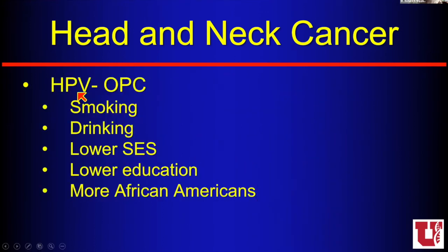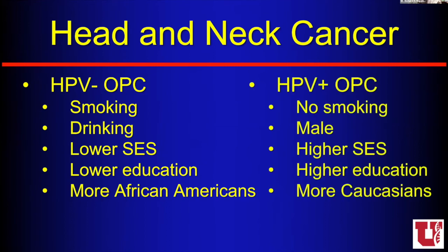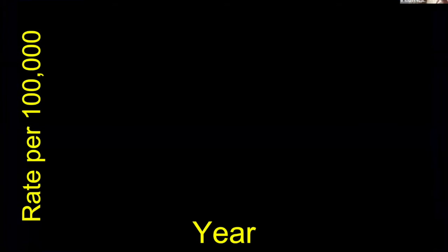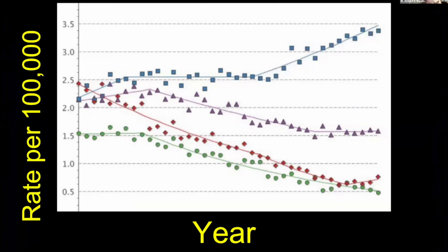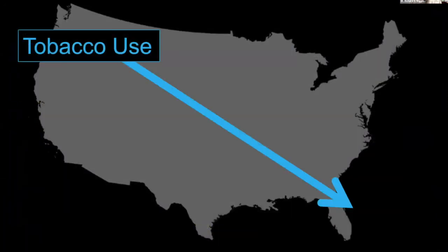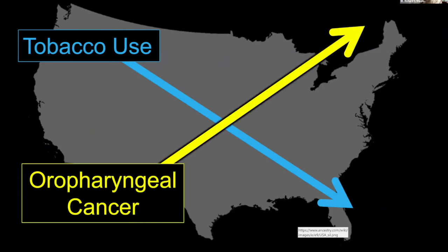HPV-negative or keratinizing squamous cell carcinomas are associated with smoking and drinking — typically lower socioeconomic status, lower education, more often African Americans. Over the past five to ten years, we now have a whole new discussion about HPV-positive oropharyngeal squames. Often these patients are non-smoking, almost always male, often from higher socioeconomic status with higher education, and more commonly found in whites. This has really changed how we think about head and neck cancer. As tobacco use has gone down, oropharyngeal carcinoma rates have actually gone up — their incidence is rising.